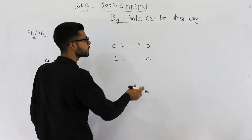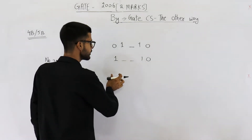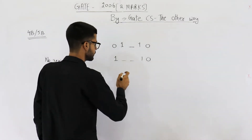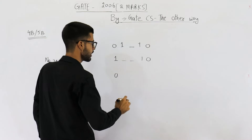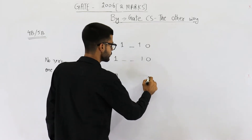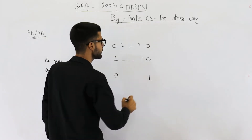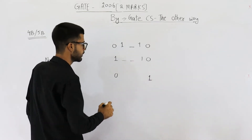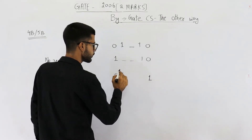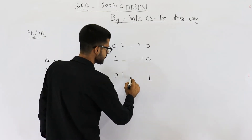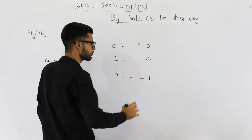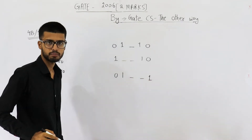Similarly, there is the case where you have a zero at the start and a one at the ending. The second bit will be fixed to one, and these two middle bits can be of your choice.